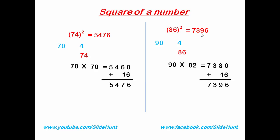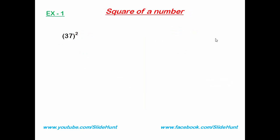Now I'm going to show you another technique to square a number. For example, to square 37 — one thing to note: when we square a two-digit number the result will be four digits. We split this number into two parts; from each part we get two digits.